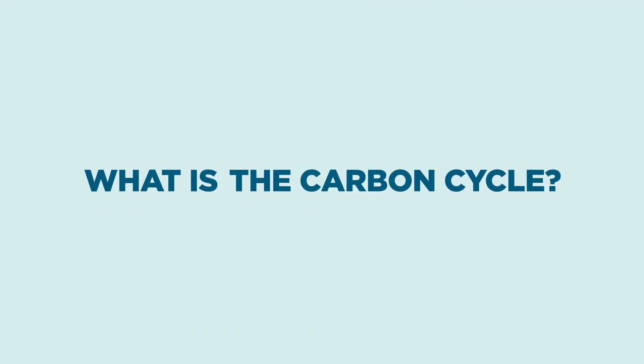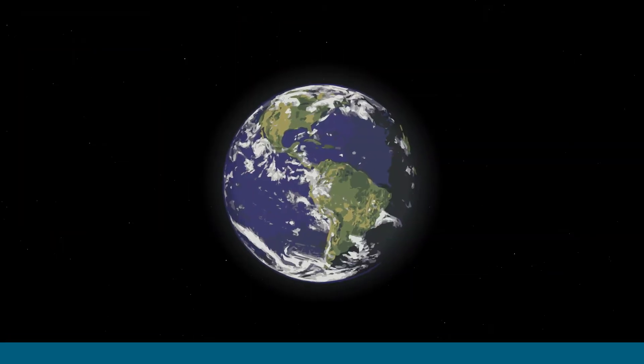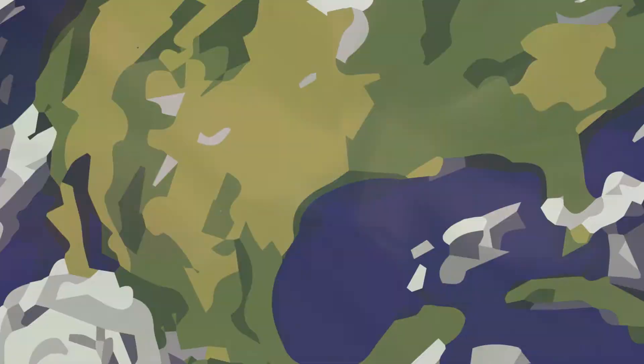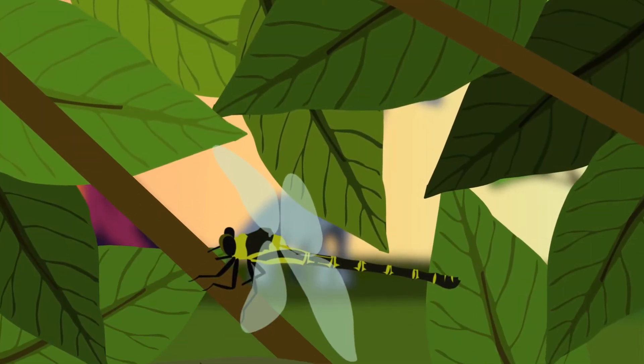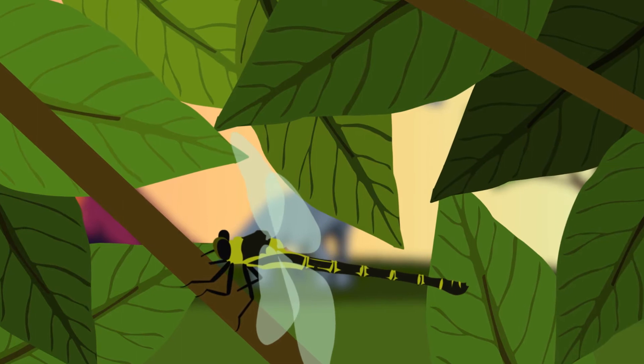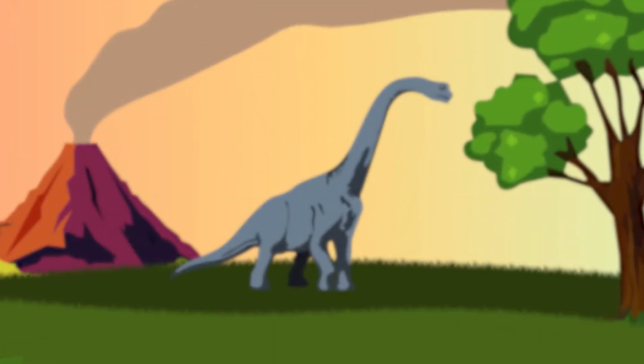What is the carbon cycle? Carbon is the chemical backbone of all life on Earth. All of the carbon we currently have on Earth is the same amount we have always had.